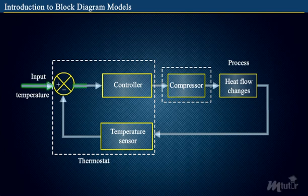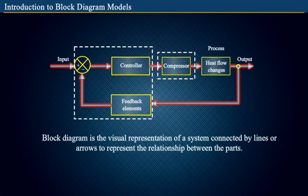Such flow charts involved in the design of control systems are called block diagrams. The block diagram is nothing but just a visual representation of a system connected by lines or arrows to represent the relationship between the parts.